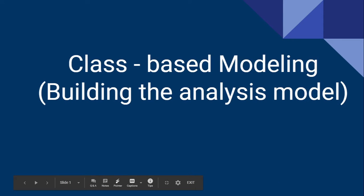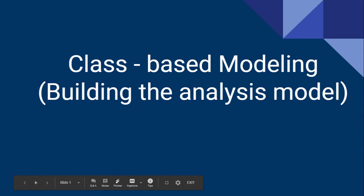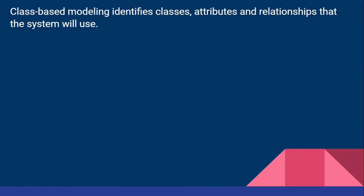Hello everyone. In this video we are going to see about class-based modeling. This comes under how to build the analysis model in software engineering. First of all, we need to collect the classes. If you are going to build the model based on the class, we have to identify what all the classes are, and once we identify the classes, we have to identify the attributes and the relationships that the system will use.